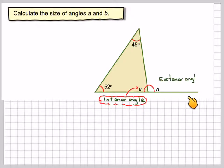And B, if you draw this line here, is called what's known as an exterior angle because it is outside the shape.